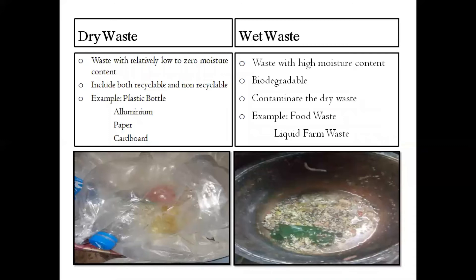Next we'll see what dry waste and wet waste are. As the name suggests, dry waste are those waste which have relatively low to zero moisture content and they include both recyclable and non-recyclable waste such as plastic bottles, aluminium, oils, paper, and cardboard. Wet waste are those waste which have high moisture content, therefore they are biodegradable in nature and are most likely to contaminate dry waste — for example, food waste and liquid farm waste.